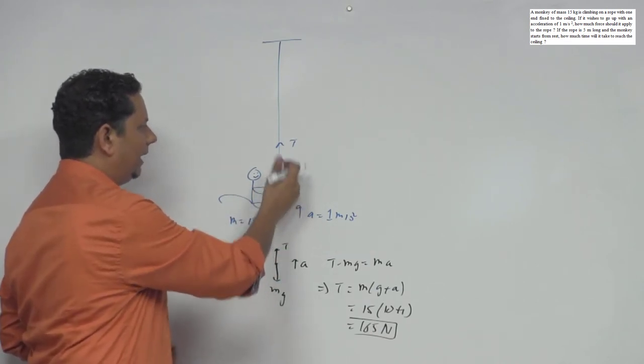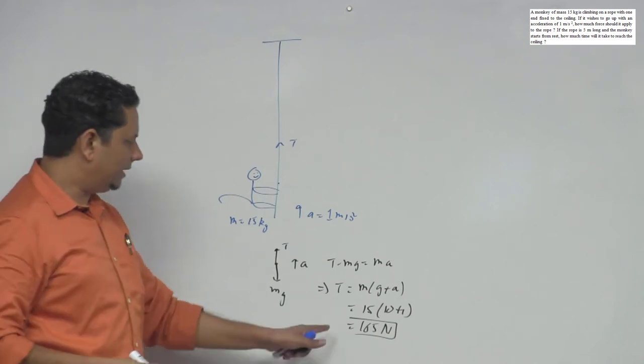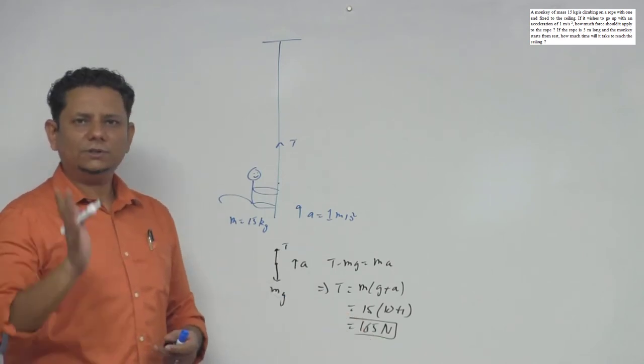And if you draw the FBD at any point, tension and force should be equal. So this should be the minimum force applied by the monkey.